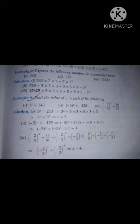Question number 8. Express the following number in exponential form. We will find their factors. For example, 343. When we factor 343, it's 7 into 7 into 7, so 7 three times. So, we can write this as 7 raised to the power 3.